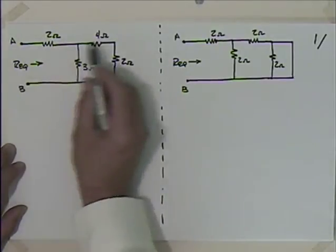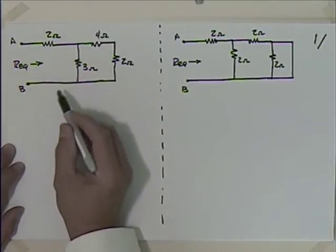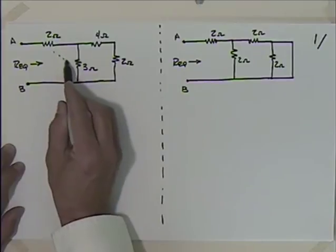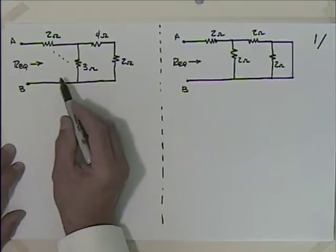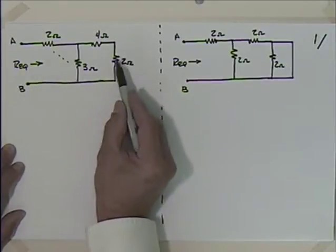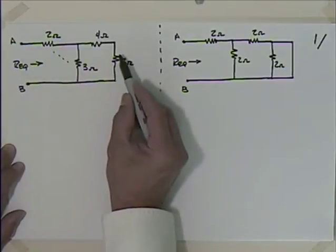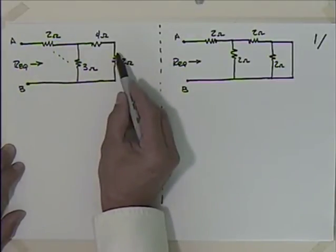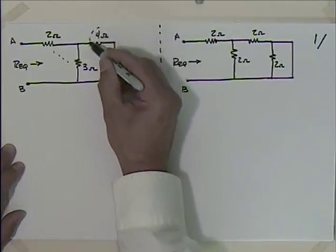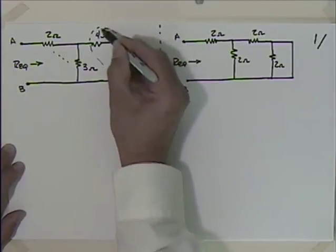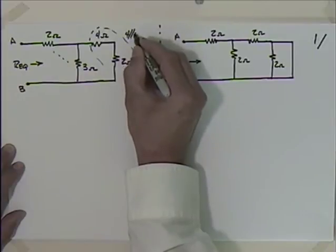If we look at this arrangement of resistors and we're trying to find the equivalent resistance between points A and B, the relationship between this 2 ohm resistor and that 3 ohm resistor is very difficult to figure out. But like I mentioned last time, if you go to the far edge and work your way back, we easily recognize that we have these two resistors that are in series — 4 ohms in series with 2 ohms.